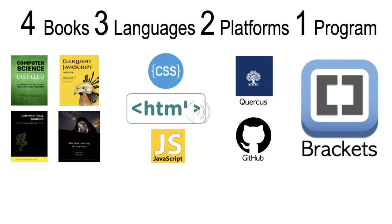The books are Computer Science Distilled, Eloquent JavaScript, Computational Thinking, and Machine Learning for Humans. All of these should be available in digital form, or you could order them in hard copy as well. The three languages that we'll use are CSS, or cascading style sheets, HTML, Hypertext Markup Language, and JavaScript.